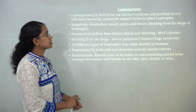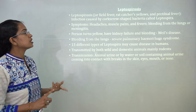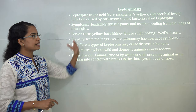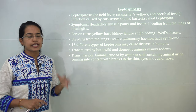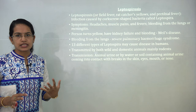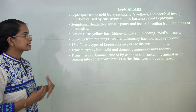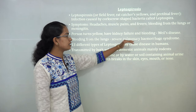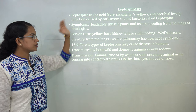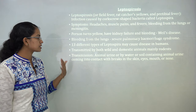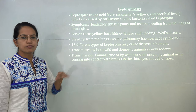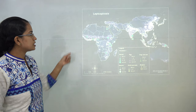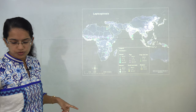Leptospirosis, also known as red catcher yellows, field fever, or pretibial fever, is an infection caused by the bacteria Leptospira. Symptoms include headache, muscle pain, bleeding from the lungs, and in severe cases meningitis. If a person turns yellow and has kidney failure or bleeding, it is known as Weil's disease. If it affects the lungs, it causes severe pulmonary hemorrhage syndrome. There are 13 different types of Leptospira, transmitted through wild and domestic animals or rodents, mainly via animal urine. Africa and Asia are most prone to this disease.